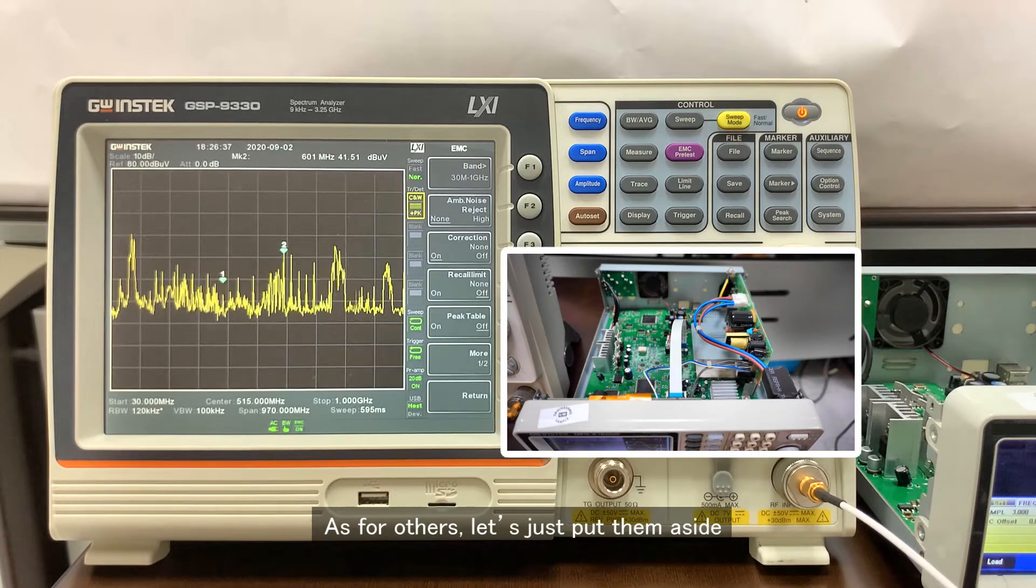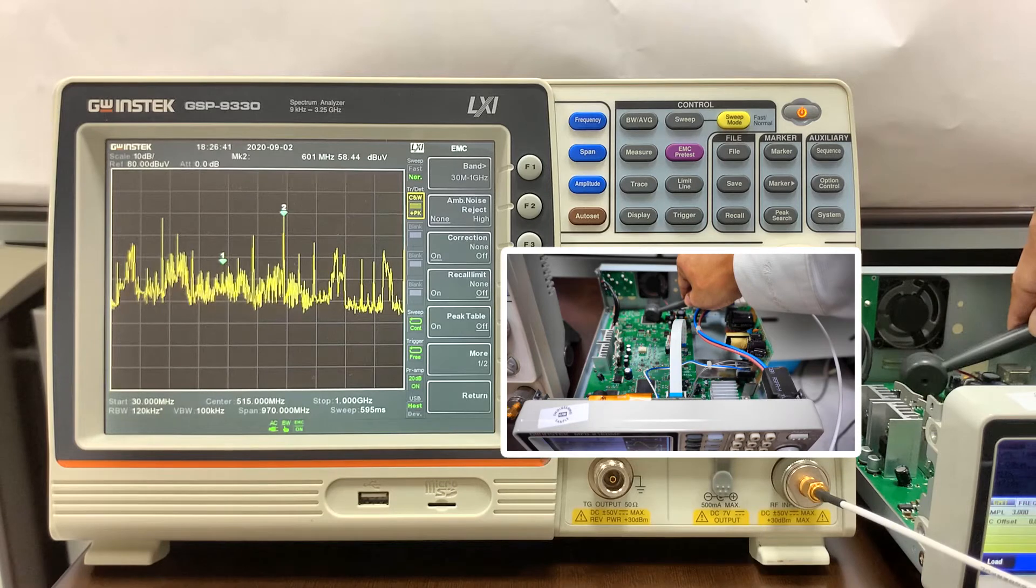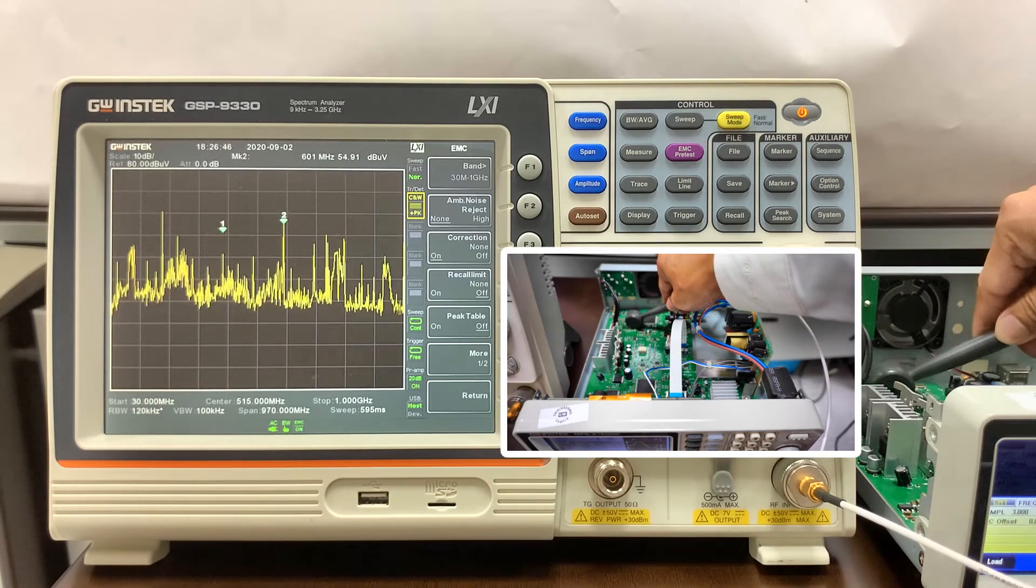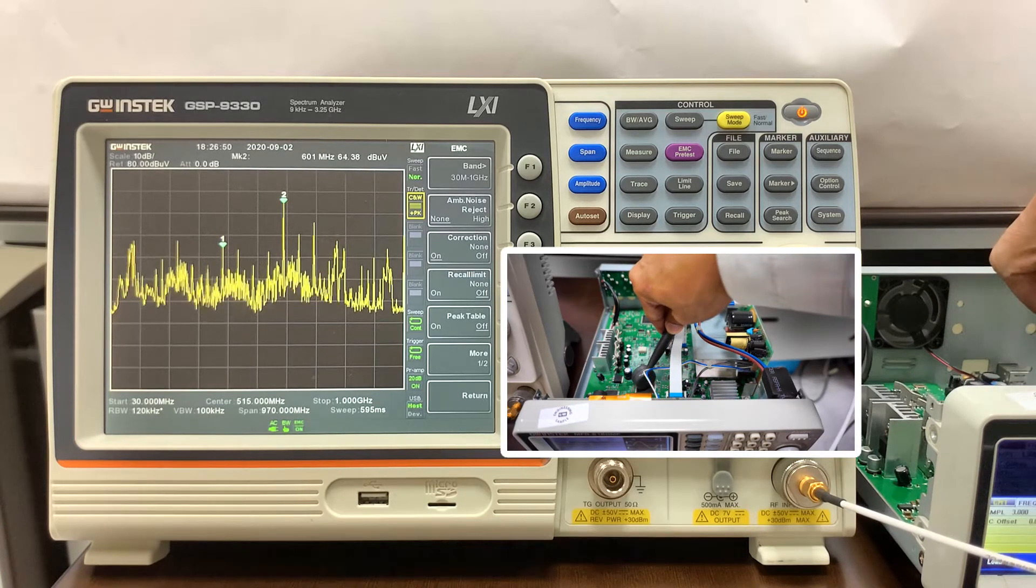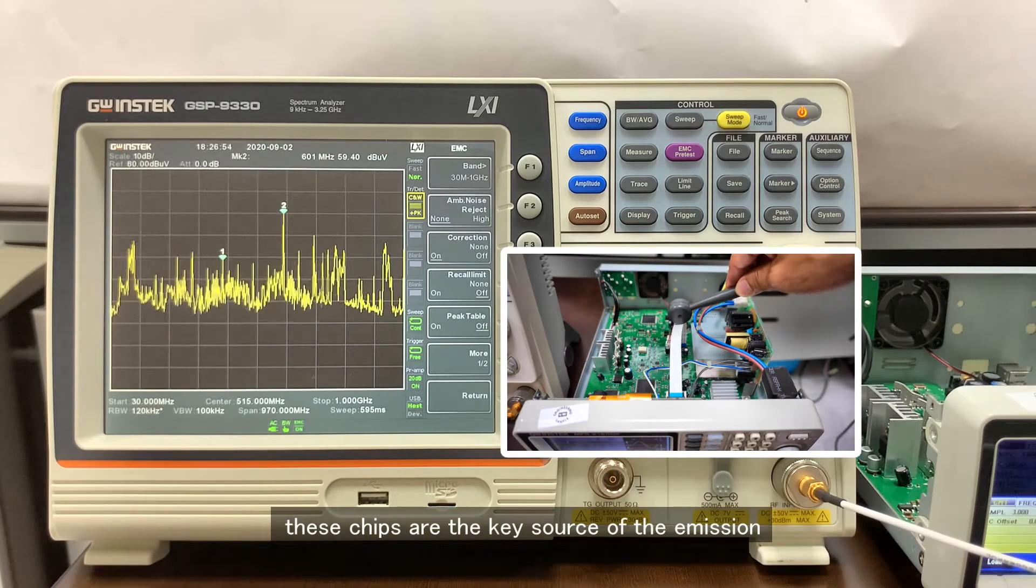But for others, let's just put them aside. The signal emission from this chip is strong, and the nearby circuit is the same. And this chip is strong too. These chips are the key source of the emission.